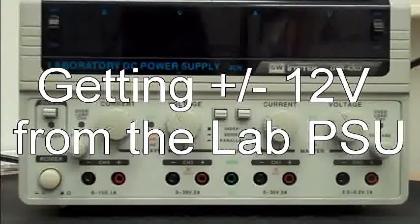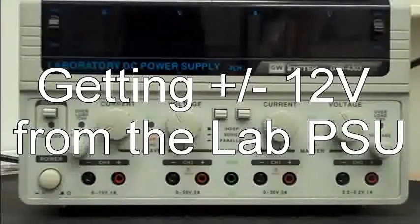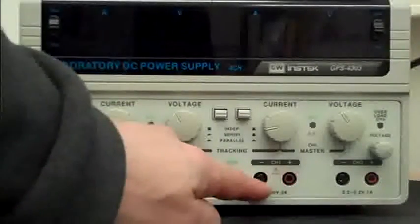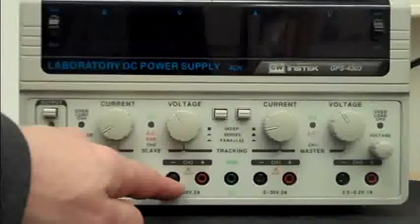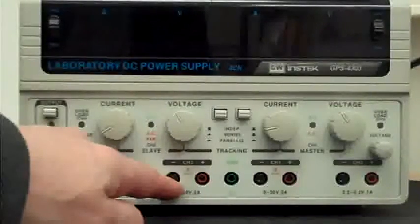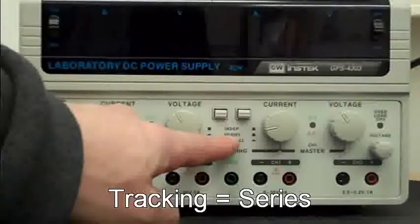How to get plus and minus 12 volts from the lab power supply. By far the easiest way to do this is to use channel 1 and channel 2 outputs, and to use them in a tracking mode called series.